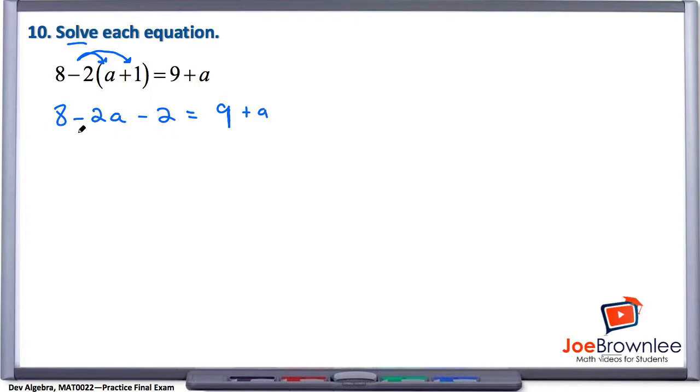Alright, let's go ahead, we can combine some like terms here on the left. We have 8 minus 2, well that gives us 6, so we have 6 minus 2a equals 9 plus a.